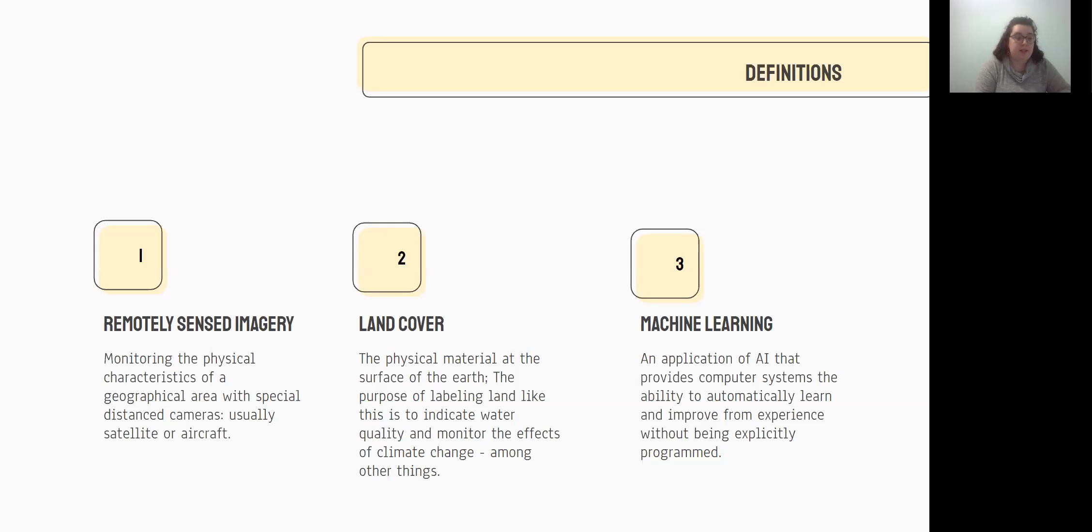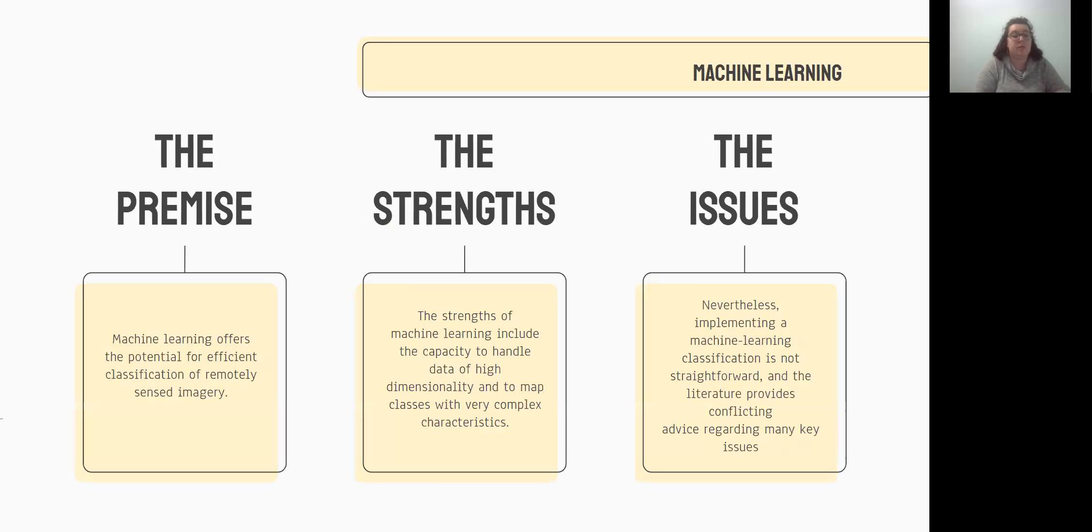Machine learning, on the other hand, is an application of artificial intelligence that provides machines or computers the ability to automatically learn and improve from its own experience rather than being explicitly programmed in every instance. So let's take machine learning in terms of the article at hand. The premise here is that machine learning offers potential for efficient classification of these remotely sensed images. So there are strengths and weaknesses to machine learning as there is with everything. The strengths include the capacity to handle data of high dimensionality and they also have the ability to map classes with really complex characteristics. However, the authors have found that implementing these systems is not straightforward.